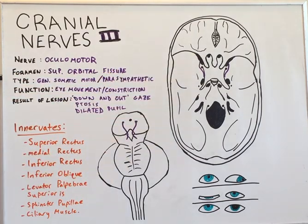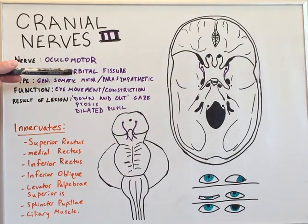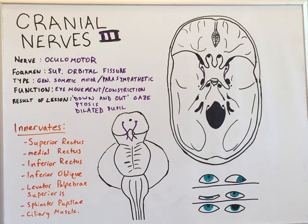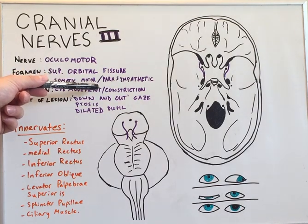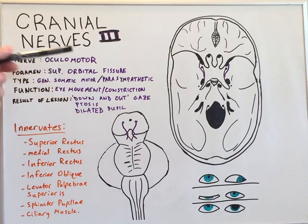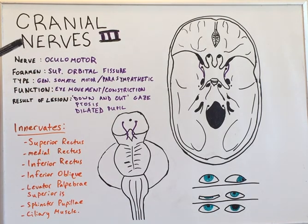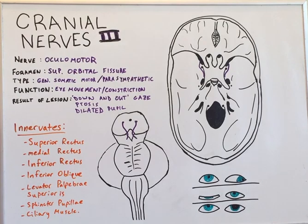The ocular motor nerve is a general somatic motor type of nerve with some parasympathetic fibers. Its function is to move the eye as well as constrict the pupils, and it has accommodation for different amounts of light in our visual field.